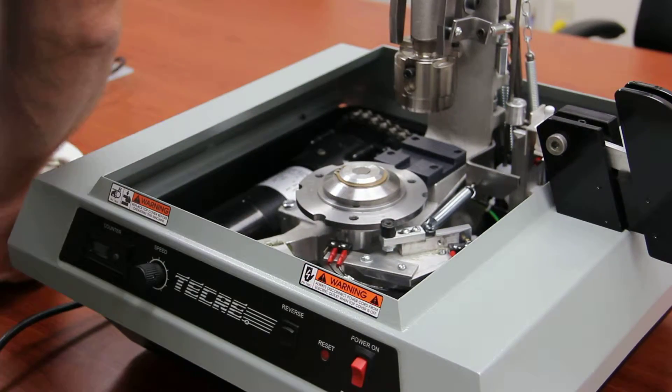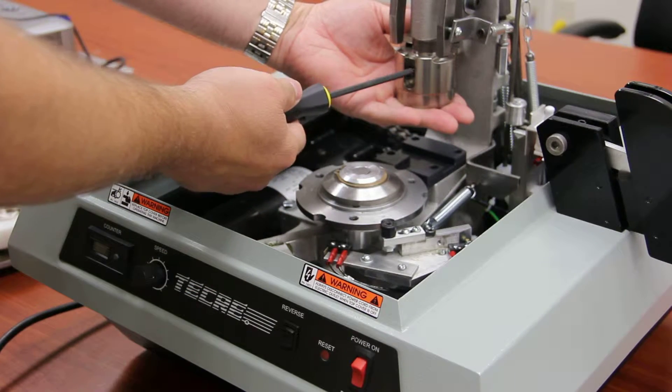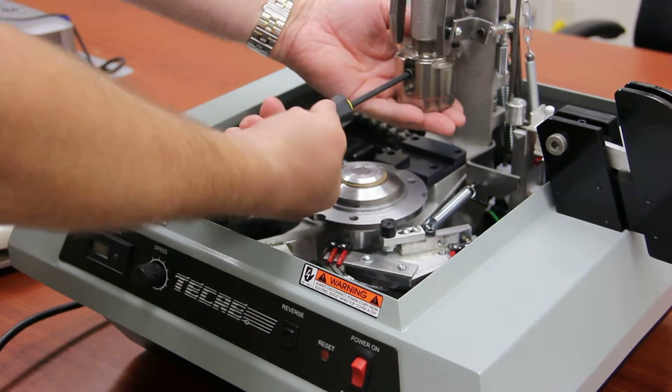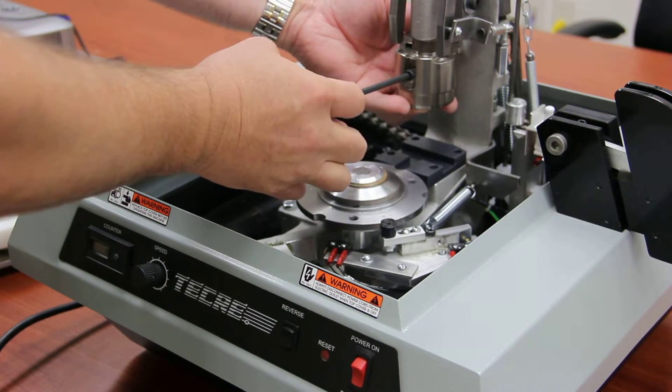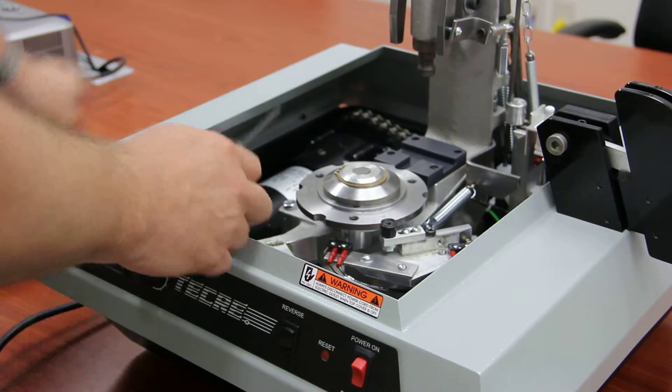Set the die set down, hold your hand underneath the upper die, and loosen the screw. You do not need to remove this screw. Just loosen it and it will slide off the ramrod. Put that on top of the die set.